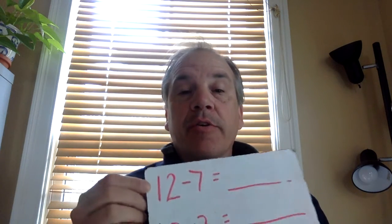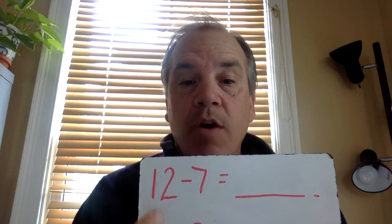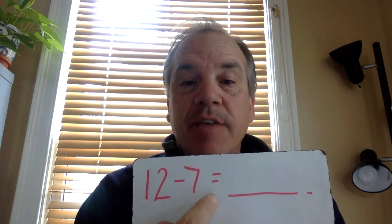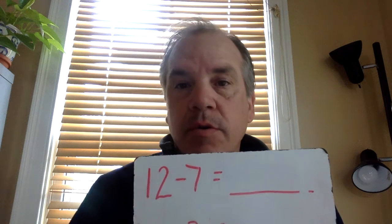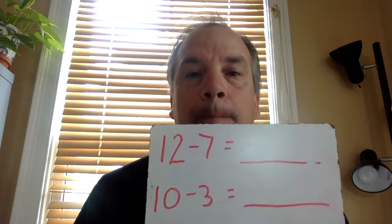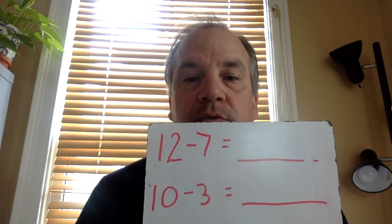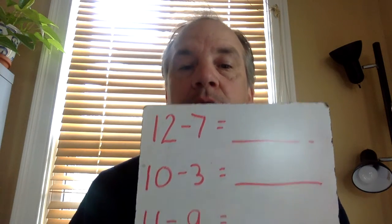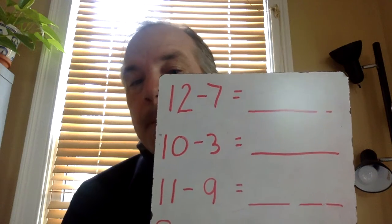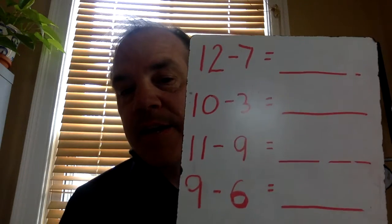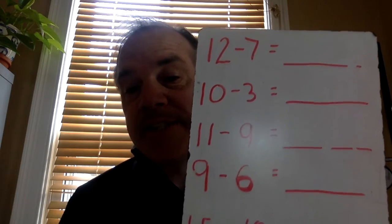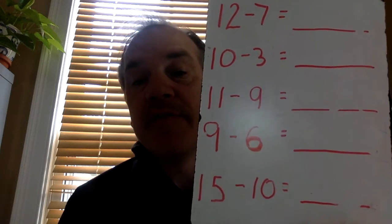Please remember to practice saying the equation so that you remember how to do the words. So: 12 minus 7 equals, 10 minus 3 equals, 11 minus 9, 9 minus 6 equals, 15 minus 10 equals.